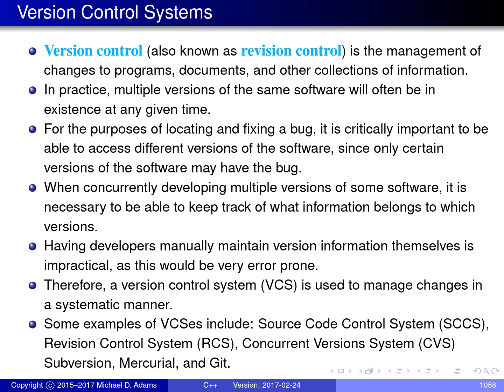We could have software developers manually maintain version information themselves, but this would be very error-prone and therefore is impractical. Instead, we use version control systems to manage changes to software in a systematic and automated manner. Some examples of version control systems include the source code control system, the revision control system, the concurrent version system, subversion, Mercurial, and Git.